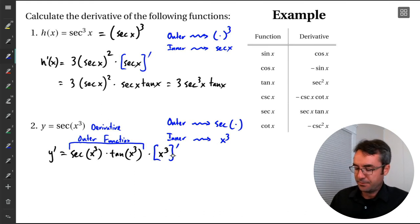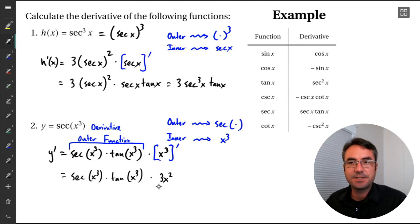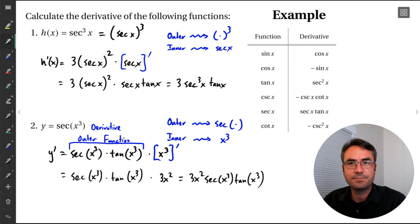All right. We still have to differentiate this inner function. And that one's just a power function. So that's no big deal. So we get secant of x cubed times tan of x cubed. And then the derivative of x cubed, which is 3x squared. And just to kind of keep things nice and clear, normally it's helpful to take this term and put it in front of all the trig terms. So we'd write this as 3x squared times secant of x cubed times tan of x cubed. There we go. Nice derivative using our chain rule.